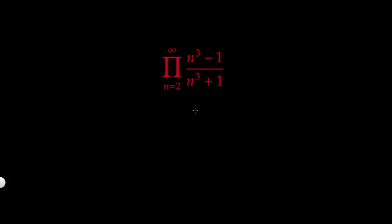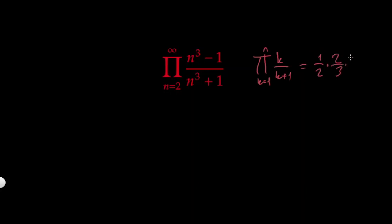In general, if we have an infinite product, it would be nice to have a recursive simplification. For example, if we had k over k+1 and took the product from k=1 to n, we'd get 1/2 · 2/3 · 3/4 — all of these terms cancel out and we're only left with 1 over n+1.